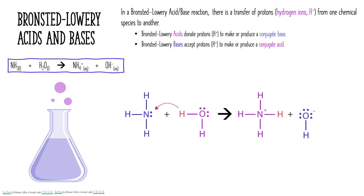One useful thing to know is that the Bronsted-Lowry acid and base are always going to be on the reactant side of an equation. When I label the conjugate base and conjugate acid, those are always going to be on the product side of the equation.